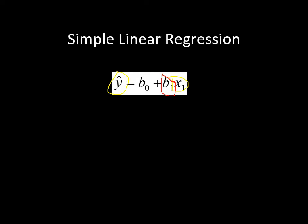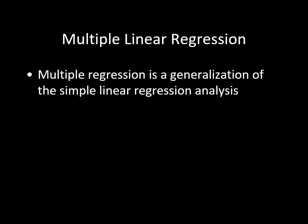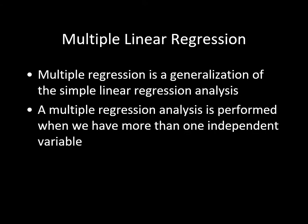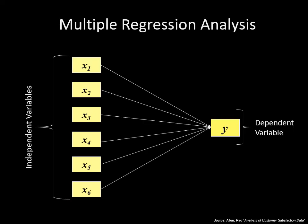Researchers often use multiple linear regression instead. The idea is the same but now you can include more than one independent variable. For the house price example, independent variables might include house size, number of bedrooms, number of bathrooms, whether there's a basement suite, a swimming pool, and access to public transit.